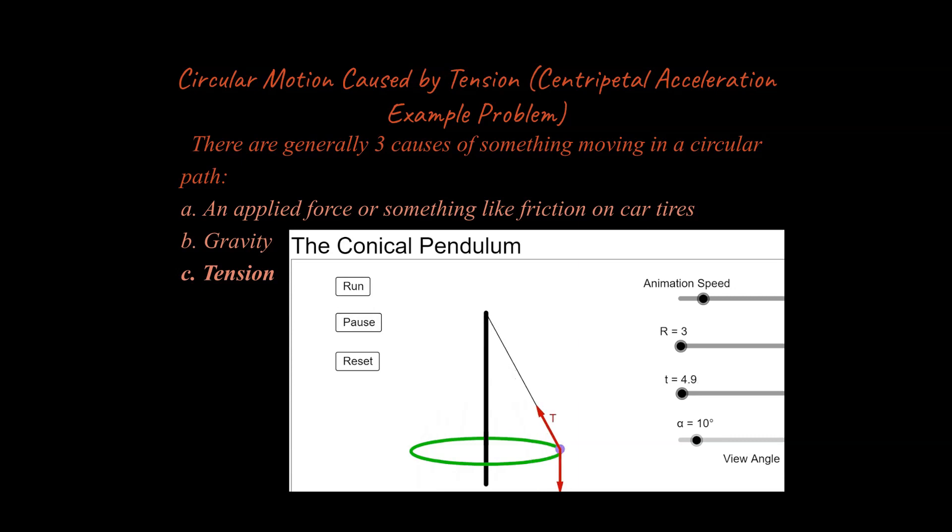Circular motion is a little special because we have to change our acceleration to be centripetal acceleration. I had mentioned that there are three main causes of something moving in a circular path: an applied force like friction, gravity, or tension.